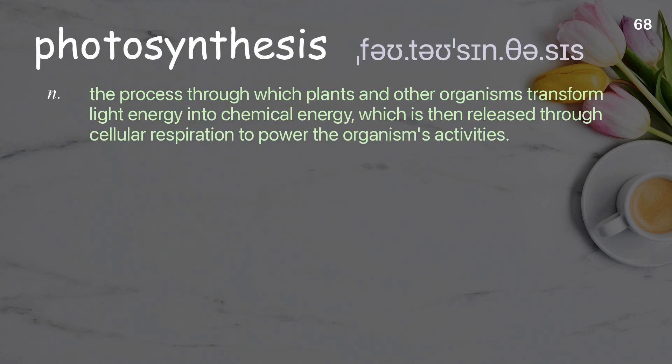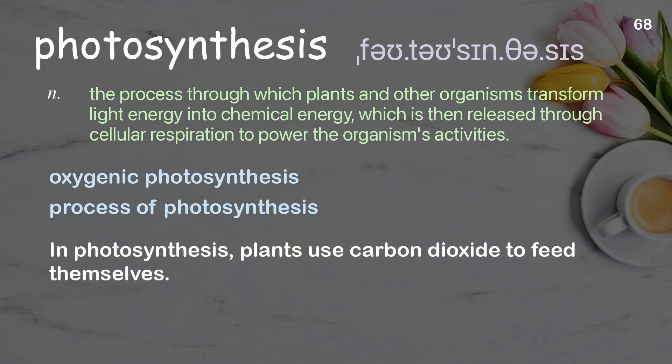Photosynthesis: the process through which plants and other organisms transform light energy into chemical energy, which is then released through cellular respiration to power the organism's activities. Examples: oxygenic photosynthesis, process of photosynthesis. In photosynthesis, plants use carbon dioxide to feed themselves.